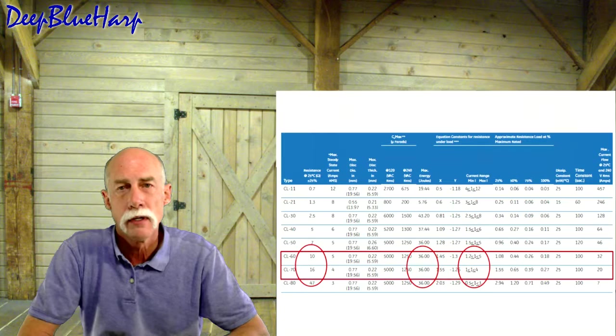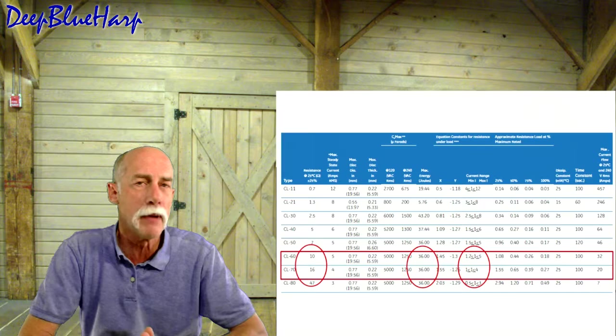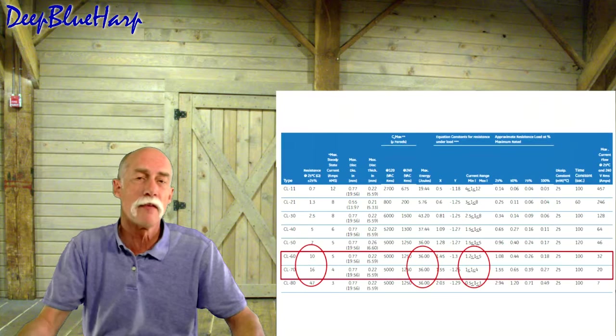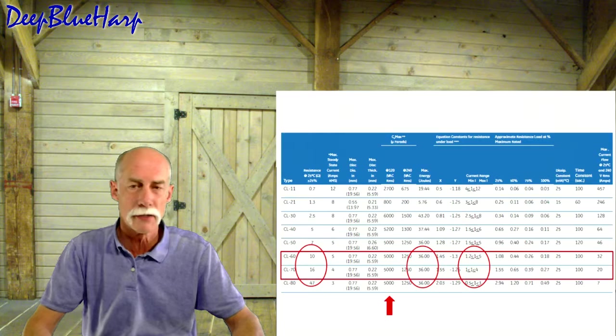However, the CL70 will only handle between 1 and 4 amps. The CL60 is 1.2 to 5 amps. So that's clearly a better choice. Unless, of course, we know we can actually run the unit, this amplifier at 4 amps. It's not designed there. It's designed for 5, so CL60 is what we want.